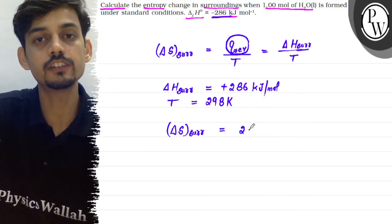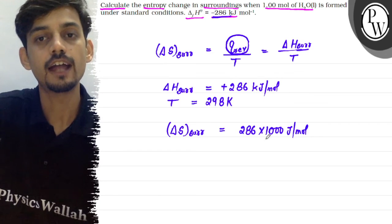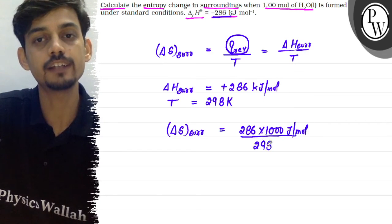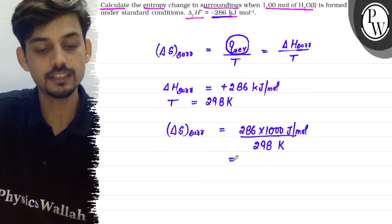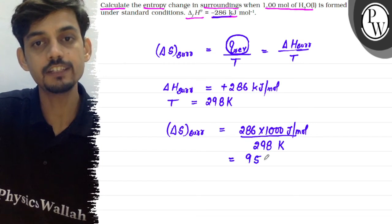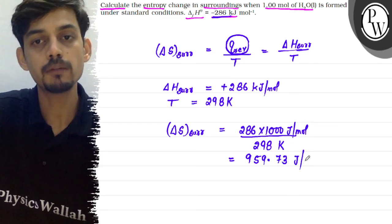Delta S surroundings equals delta H surroundings divided by T, which is 286 kilojoules, or 286 times 1000 joules, divided by 298 Kelvin. This gives 959.73 joules per mole Kelvin.